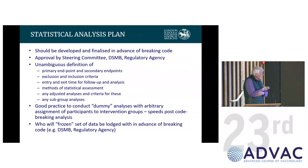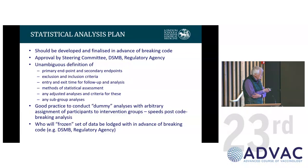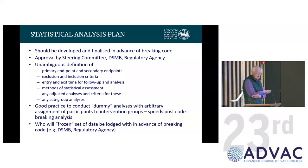The plan is generally approved by the trial's steering committee, the DSMB, and if it's a regulatory trial, by the regulatory agency. In that plan there should be unambiguous definitions of what the primary endpoint is — particularly important in regulatory trials — and what the secondary endpoints are. It should also specify who's going to be excluded and included in the analyses, what the entry and exit times are, what methods of statistical analysis will be used, any adjusted analyses and their criteria, and any planned subgroup analyses.